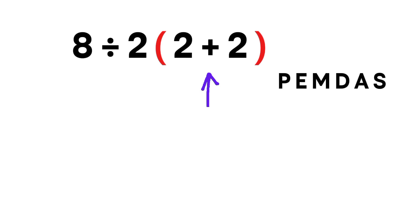So step 1: Handle the parentheses. 2 plus 2 equals 4. Now the expression becomes 8 divided by 2 times 4.